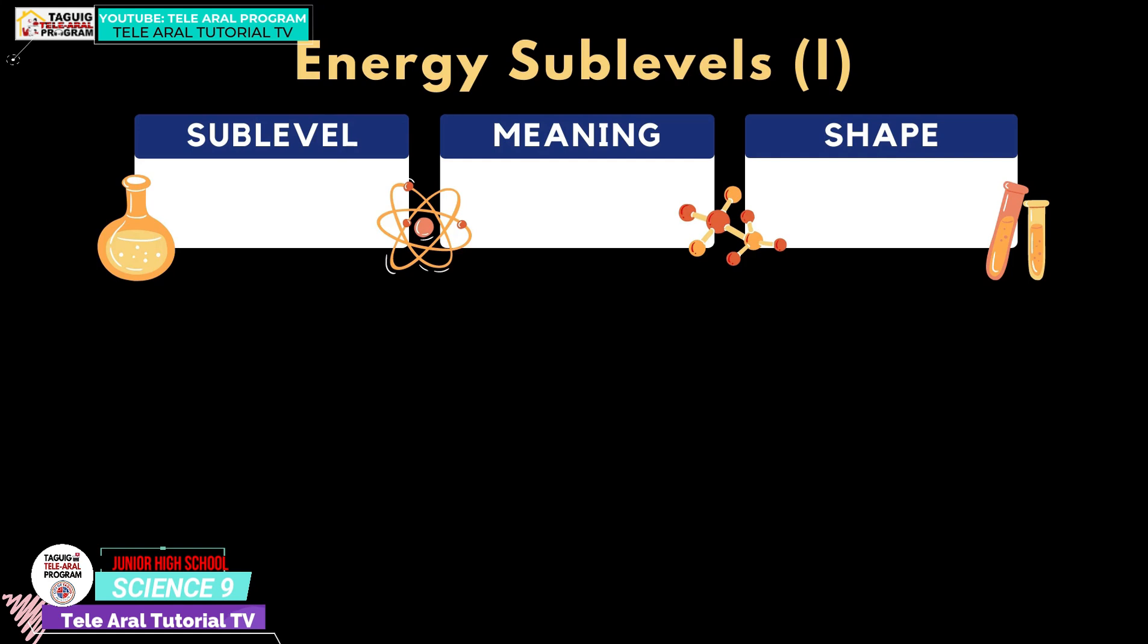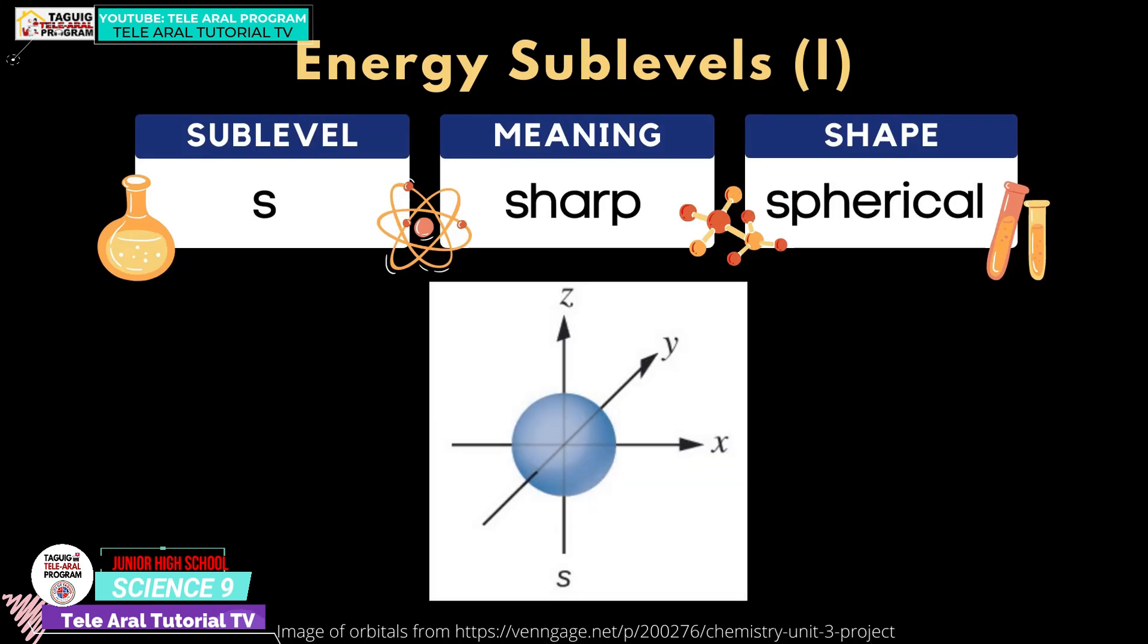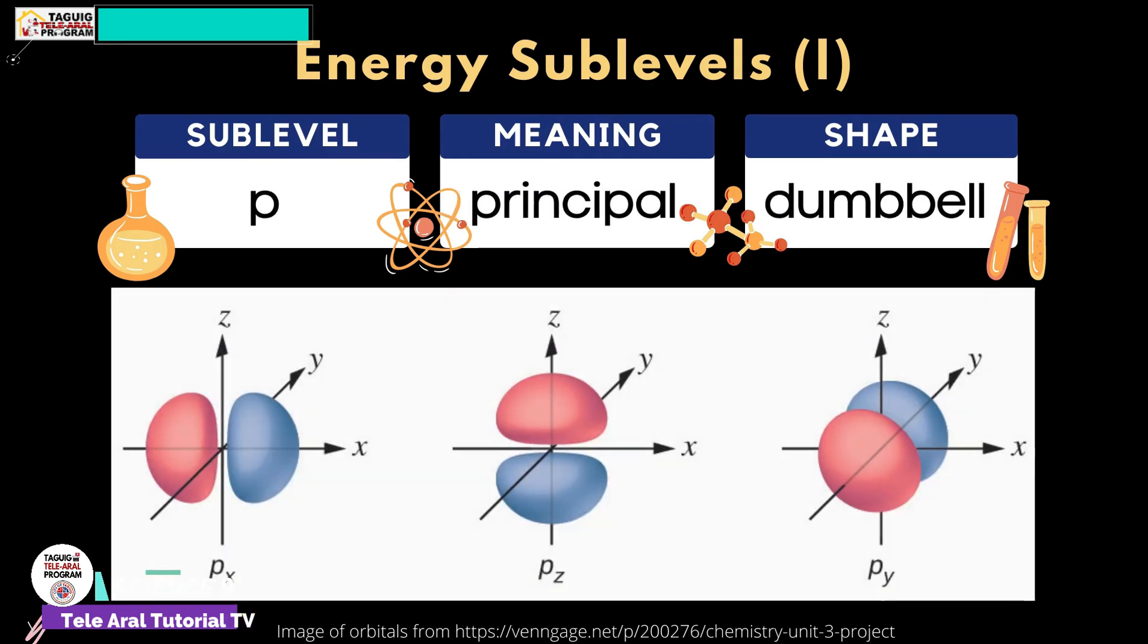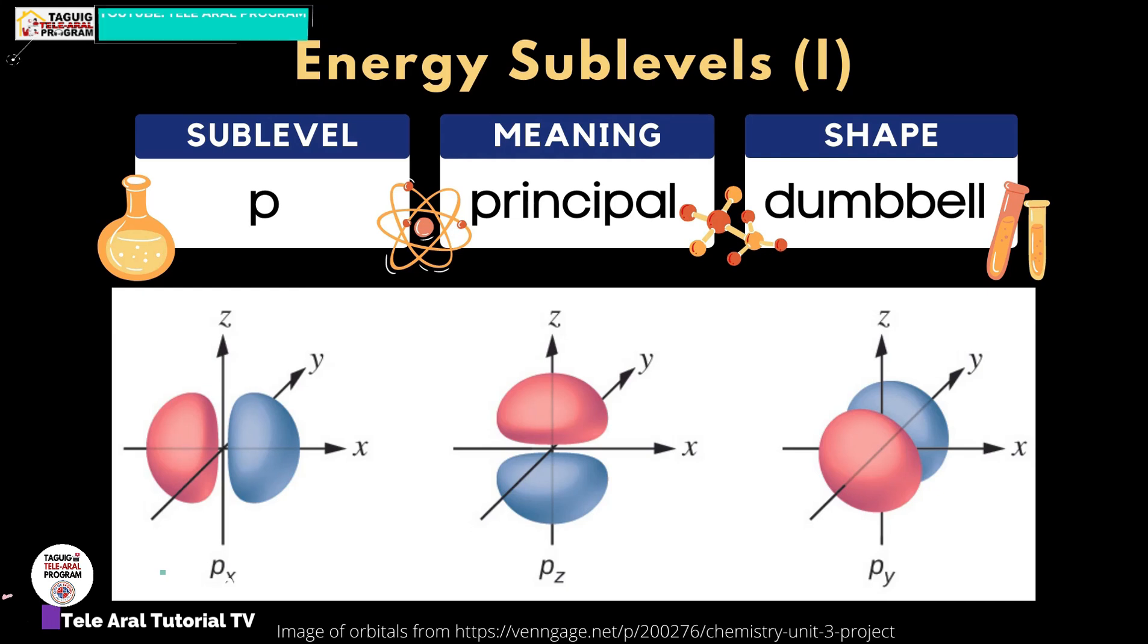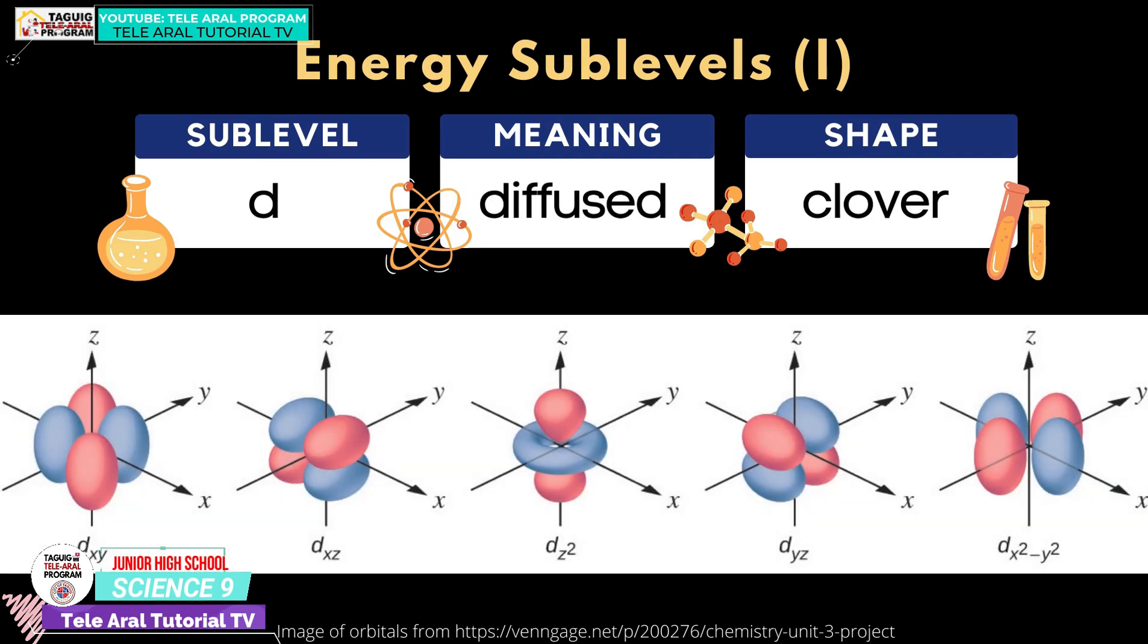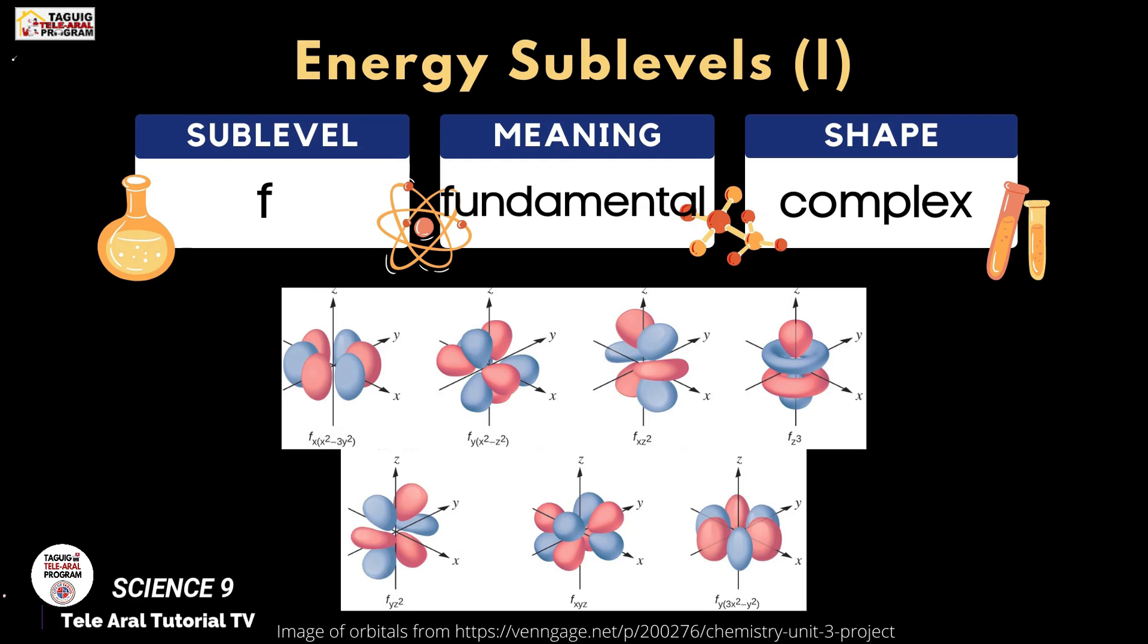Let's organize the different sublevels. The first energy sublevel is S, meaning sharp. Its shape is spherical. Next is the P sublevel. P means principal. It has the shape of a dumbbell. Next is the D sublevel. D means diffuse. And when you look at the images, it looks like a clover. Lastly, the F sublevel. F means fundamental. And these sublevels have complex shapes.